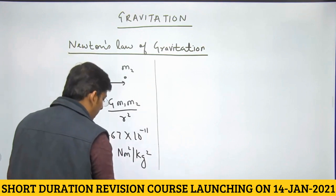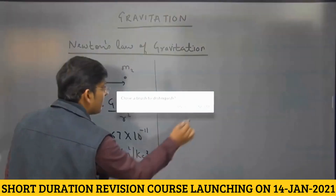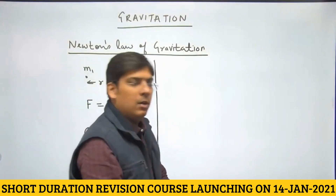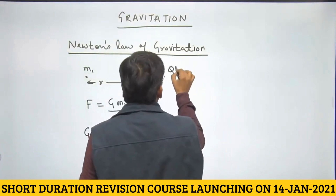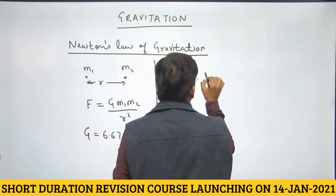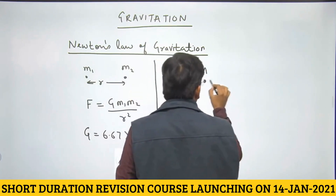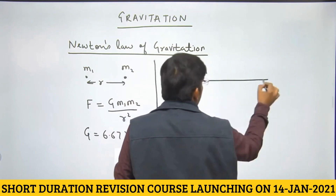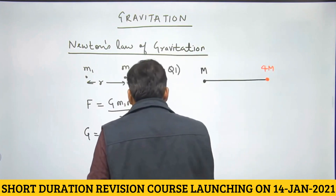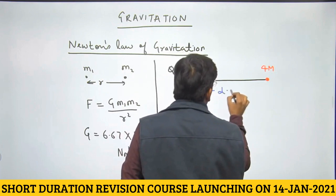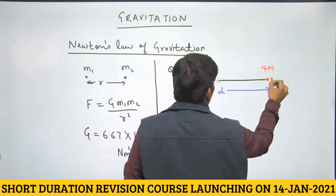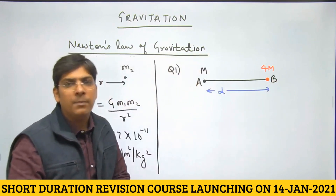Let us practice some questions based on Newton's law of gravitation. Question number one: there are two point masses, one having mass capital M and the other having mass 4 times capital M. Both masses are separated by a distance D. In between M and 4M, you have to place a point mass so that the net force acting on it becomes zero.